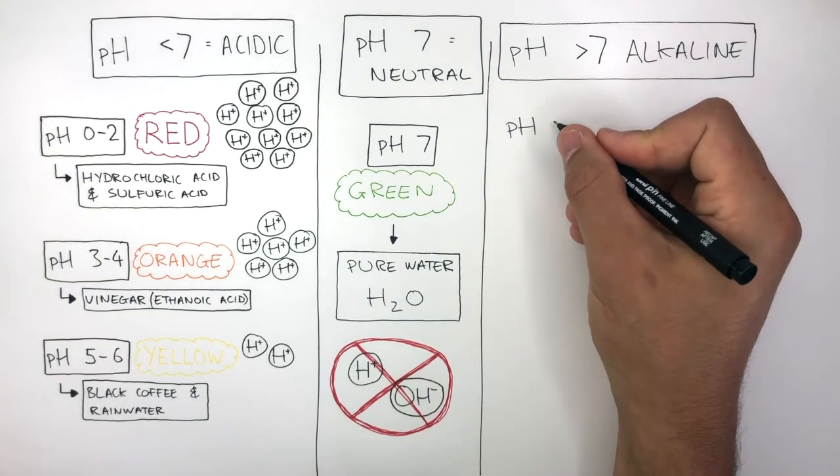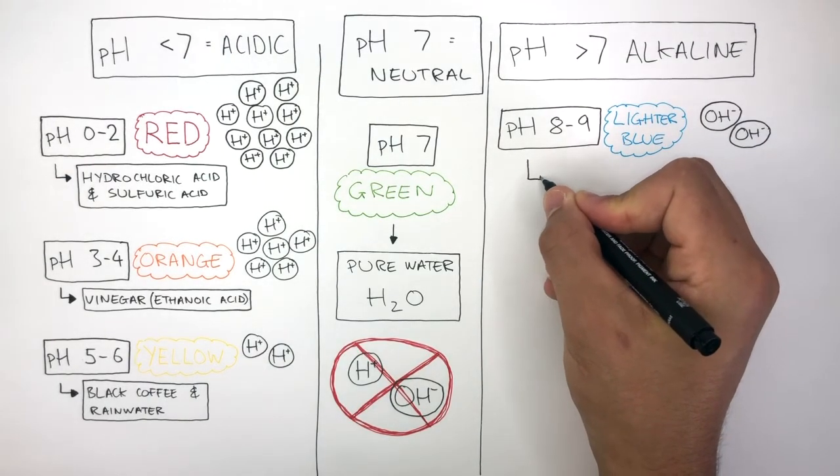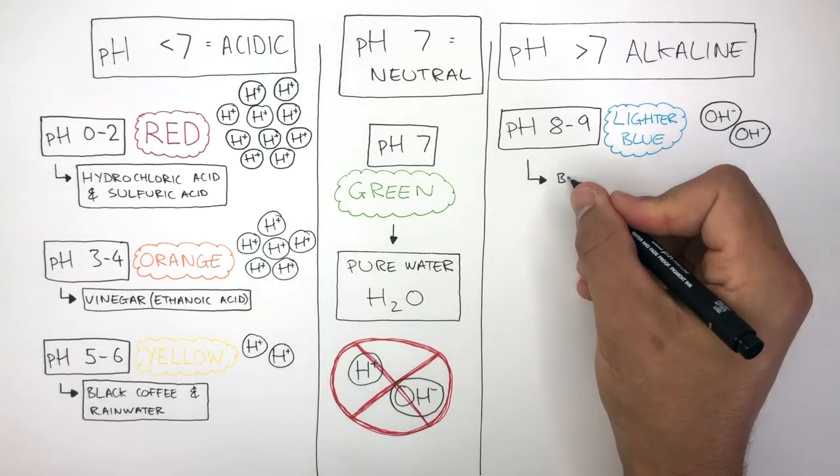A pH of 8 to 9 will cause Universal Indicator solution to be lighter blue. A pH of 8 to 9 will have few hydroxide ions in solution and an example of this pH would be baking soda.